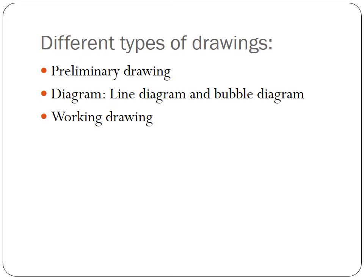A line diagram or bubble diagram is a sketch which may or may not be to scale, which indicates the arrangement of rooms, toilets, passages, veranda, etc., and also the positions of the doors, windows, and other openings.